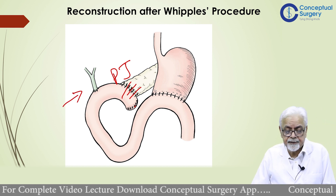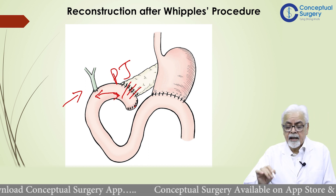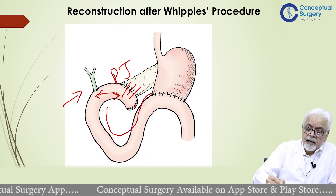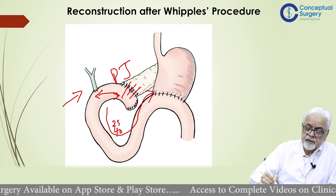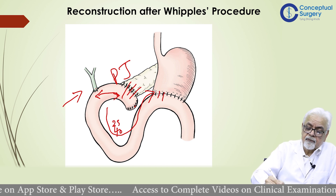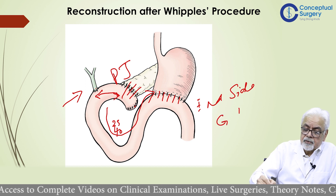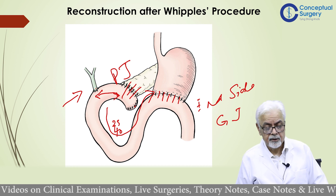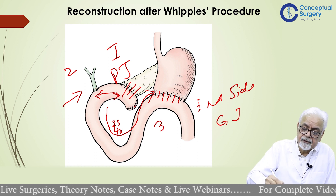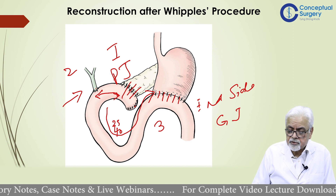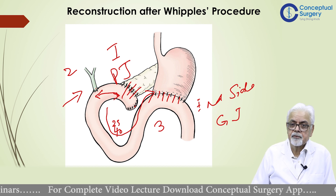Then there is a choledochojejunostomy, where the bile duct is anastomosed about 15 to 20 centimeters from the pancreaticojejunostomy. And then, generally about 25 to 40 centimeters downstream from the choledochojejunostomy, we perform an end-to-side gastrojejunostomy after the partial gastrectomy. So the reconstruction involves: first, pancreaticojejunostomy; second, choledochojejunostomy; and third, gastrojejunostomy. There are various modifications, but this is the most common approach.